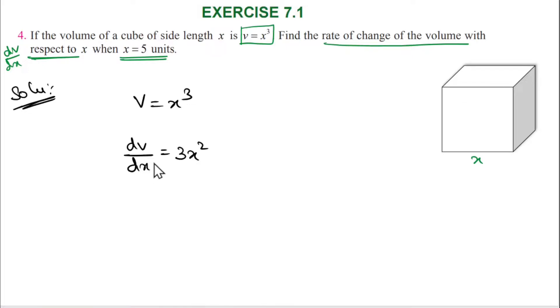Okay? Then DV by DX is equal to 3x square. So this is our required answer. Thank you, friends.